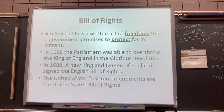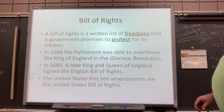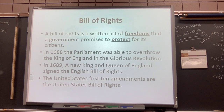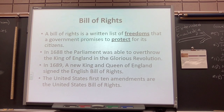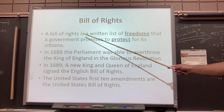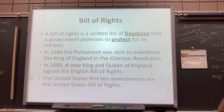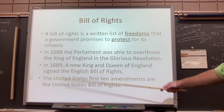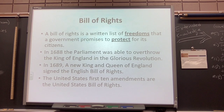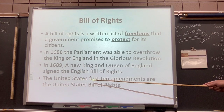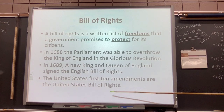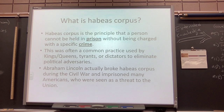The Bill of Rights was not included in the initial Constitution — it became the first ten amendments. A Bill of Rights is a written list of freedoms that the government promises to protect for its citizens. Some individuals refused to sign the Constitution without it, so it was added. In 1688 Parliament was able to overthrow the King of England in what they called the Glorious Revolution, and in 1689 a new King and Queen signed the English Bill of Rights. The United States Bill of Rights are similarly the first ten amendments to our Constitution.